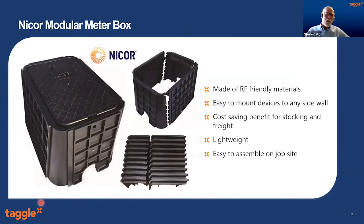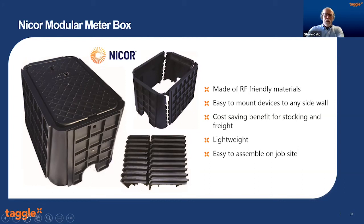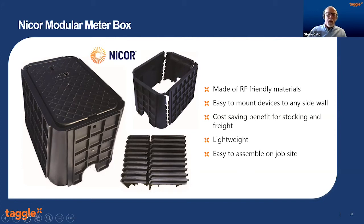NICOR also do a module box — it's basically a four-piece box that comes apart and flat-packs. If you've ever had to install 3,000 to 4,000 pit boxes, they take up a lot of space on a truck. If you can flat-pack them, you take up about one fifth of the space, maybe even less. The lids are tested with the box and meet Class C Australian standards without a problem. Cost savings for freight, lightweight, easy to assemble — they just click together on site.